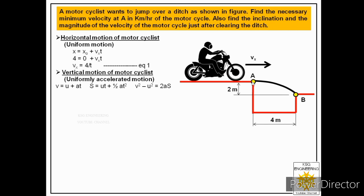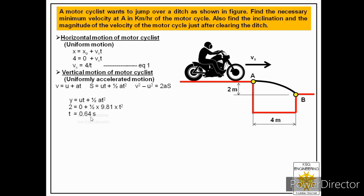Here s is the vertical distance traveled from A to B, which is two meters. The initial velocity in the y direction, vy₀, is zero because the motorcyclist was traveling along the x direction only. The acceleration is g = 9.81 m/s². Substituting: 2 = 0 + ½ × 9.81 × t². Solving gives t = 0.64 seconds.